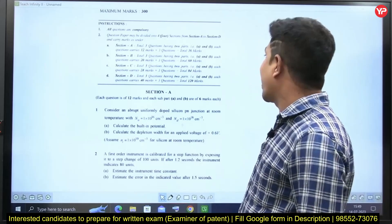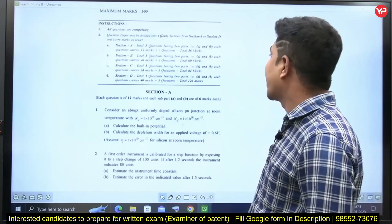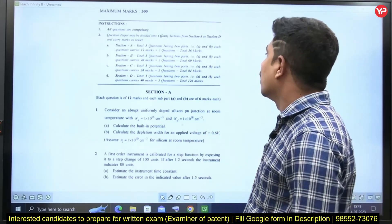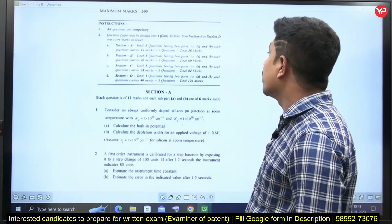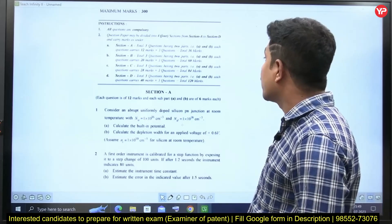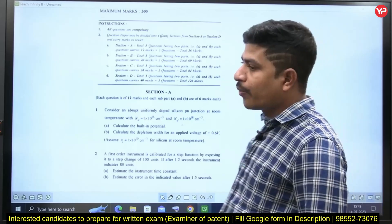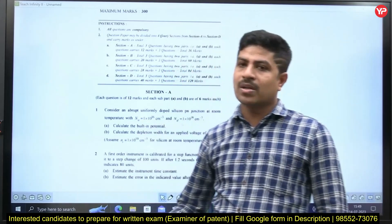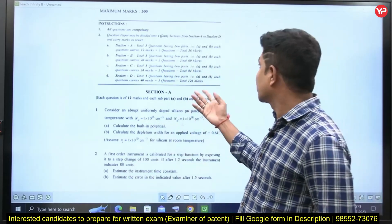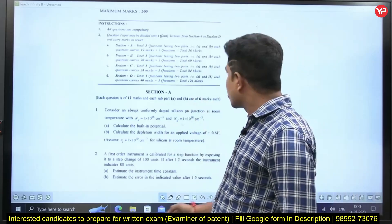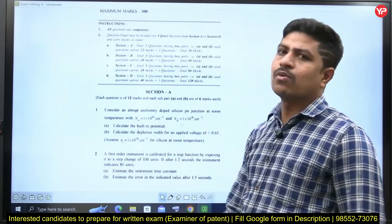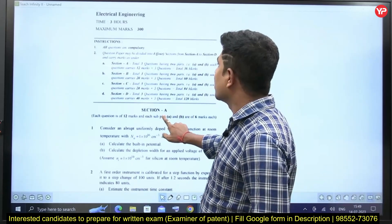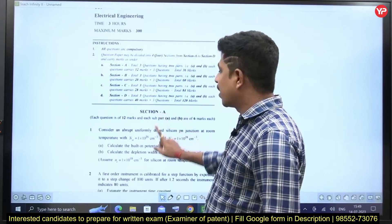Section D is going to have three questions again, with Parts A and B. Each question carries 40 marks, so 120 marks. 120 plus 84 plus 36 plus 60 is equal to 300. The total paper is of 300 marks.